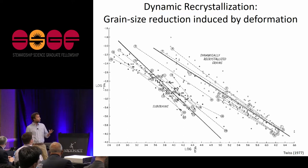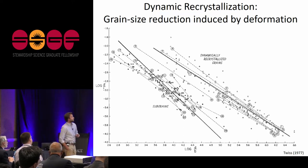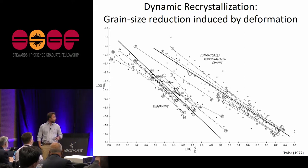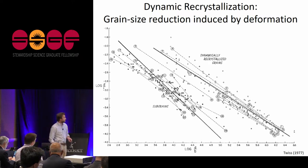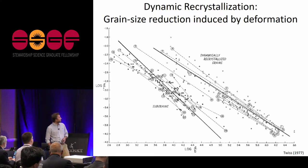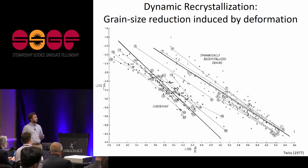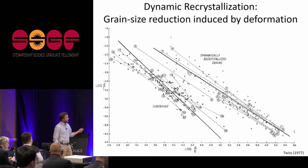In addition to grain growth, there are also mechanisms for grain size reduction. Dynamic recrystallization is one such mechanism where dislocations facilitate the addition of more grain boundary area, resulting in grain size reduction. There is a relationship between deformation stress and grain size such that at high stresses there is a smaller grain size, and this has been shown for mantle materials.